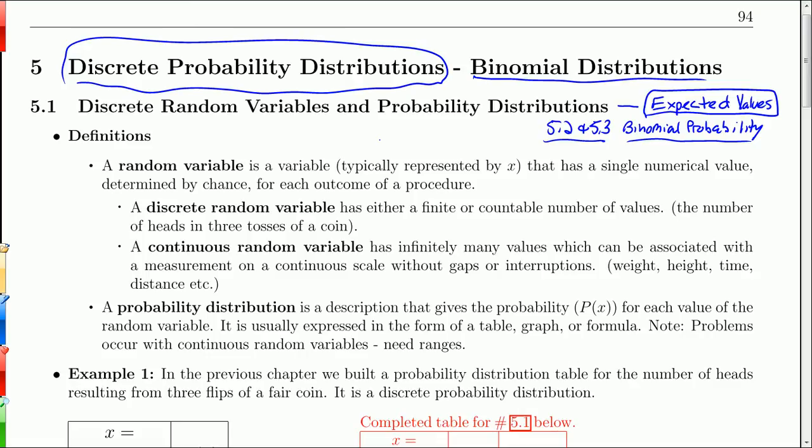And then in Sections 5.2 and 5.3, we'll go into a specific type of discrete probability distribution, known as the binomial probability distribution, and we will characterize what exactly that entails and how to do some calculations within that distribution.